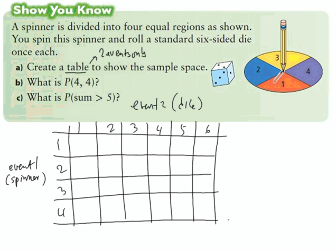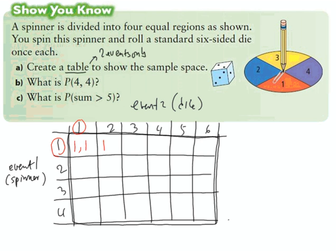All of the space inside the table is our sample space — all the combinations possible for the die and the spinner. For example, a one on the die and a one on the spinner gives us '1,1.' Moving along: one on the spinner with a two on the die, then three, four, five, six. The next row would be two-one, two-two, two-three, and so on.